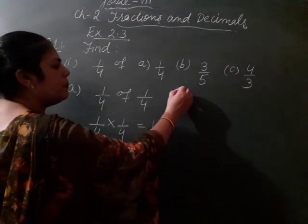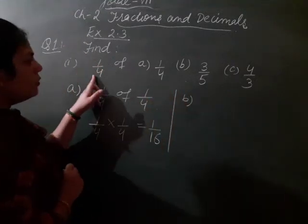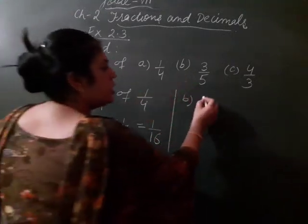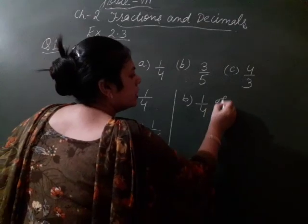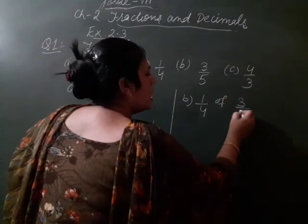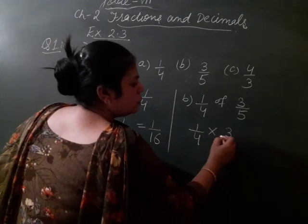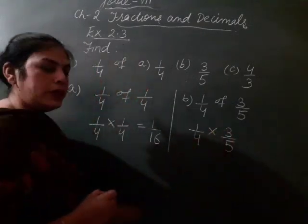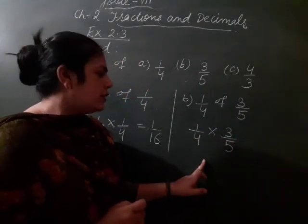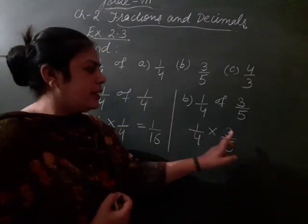Now B part: You have to find 1 by 4 of 3 by 5. So of means you have to multiply by 3 by 5. Now up or down anywhere cutting nahi hoti - our numerator, denominator same table pe nahi aati.